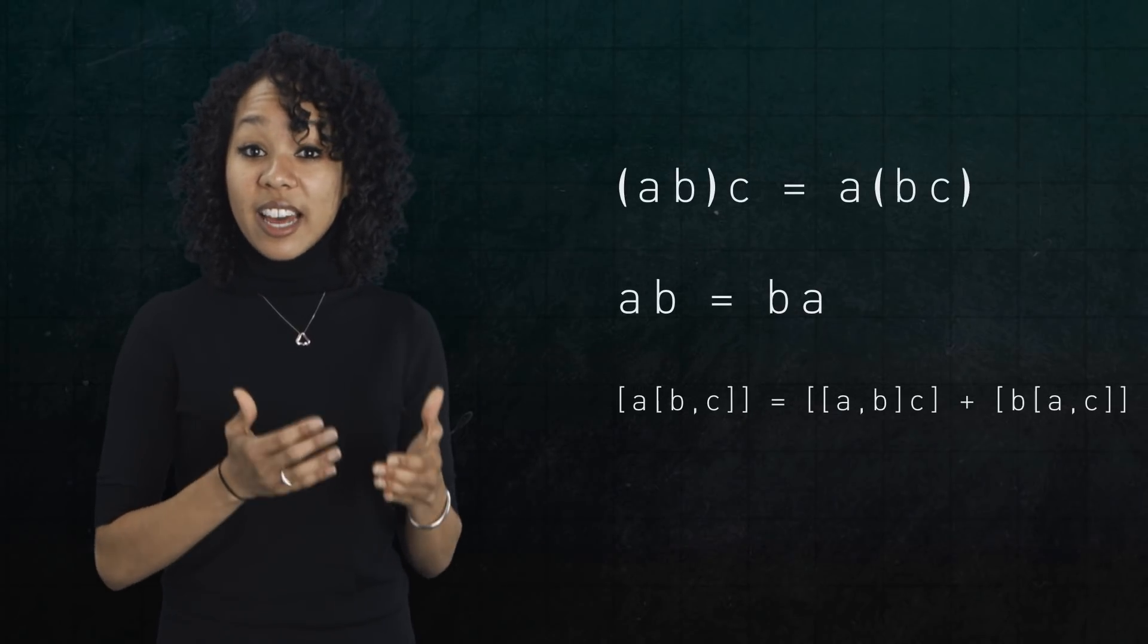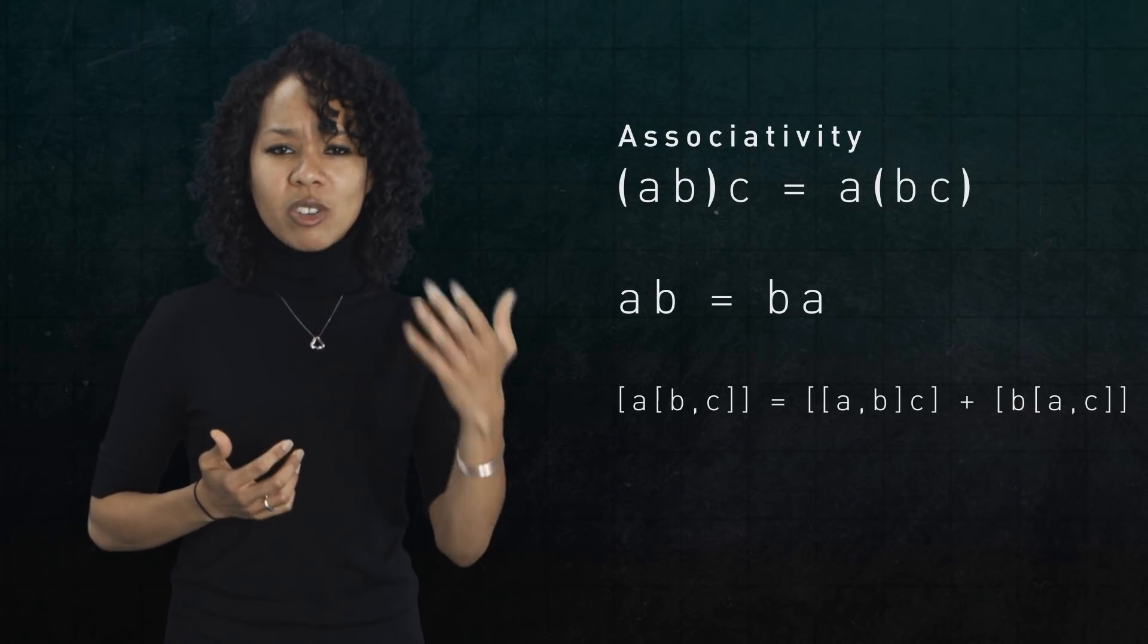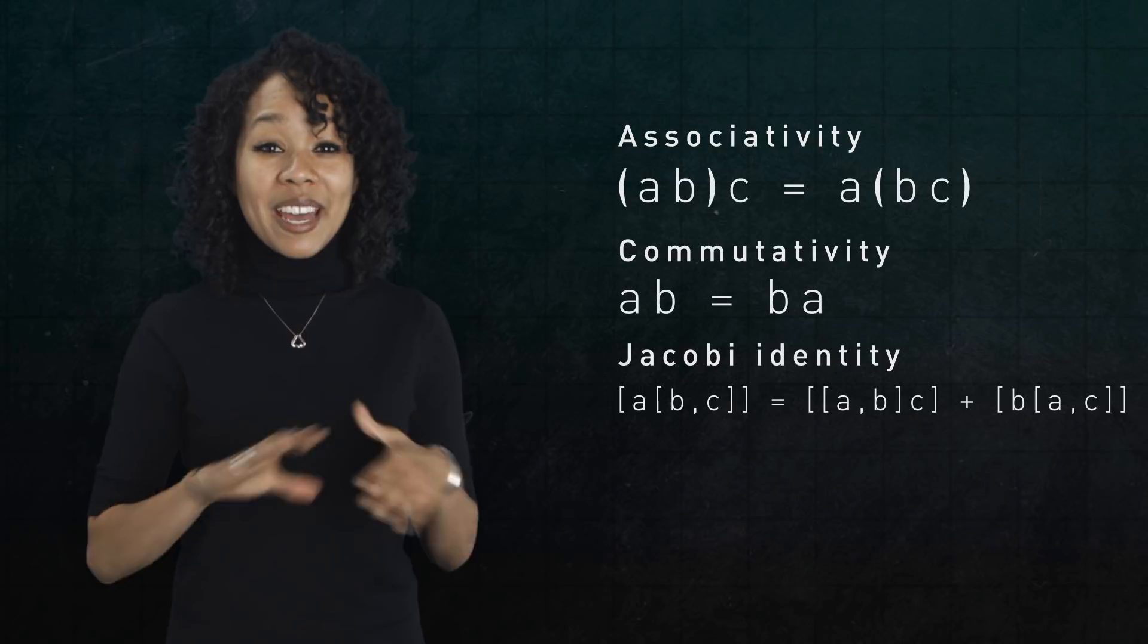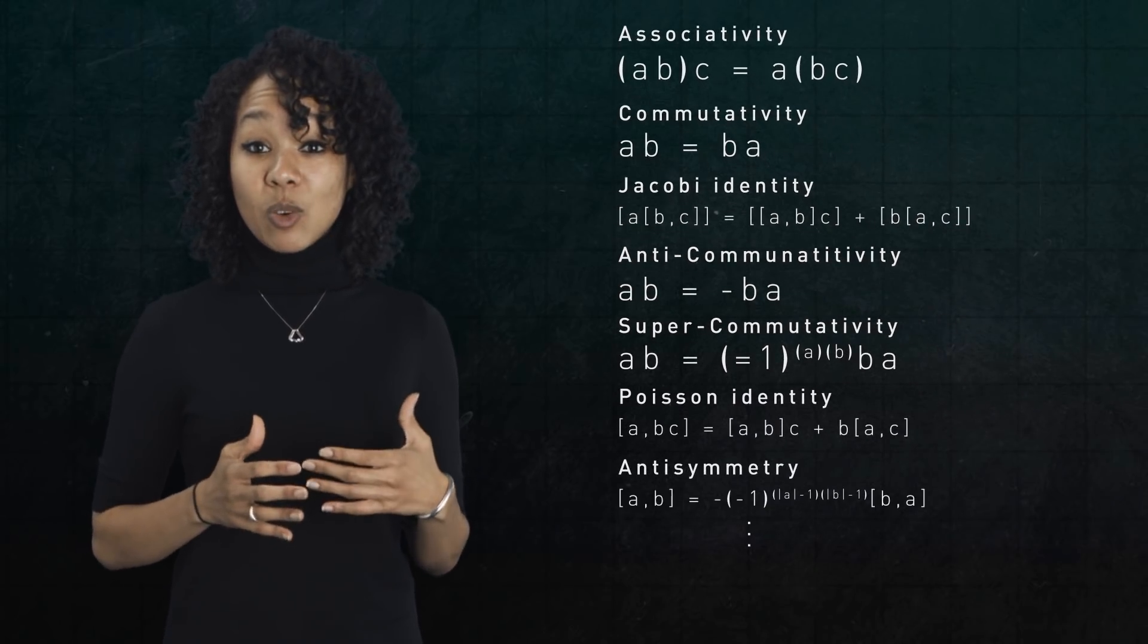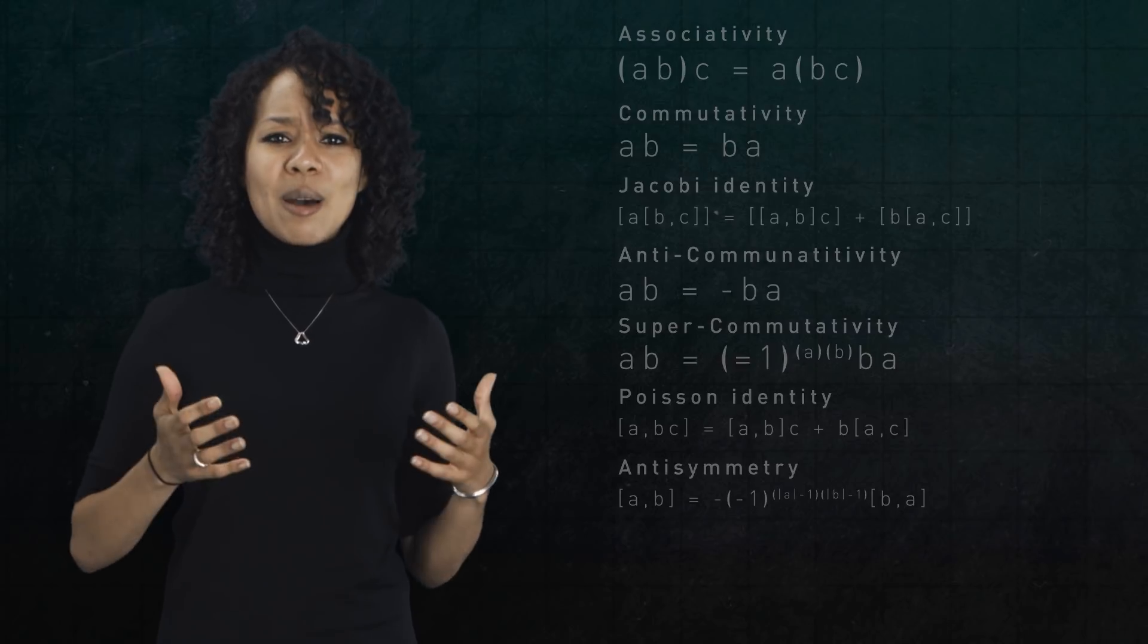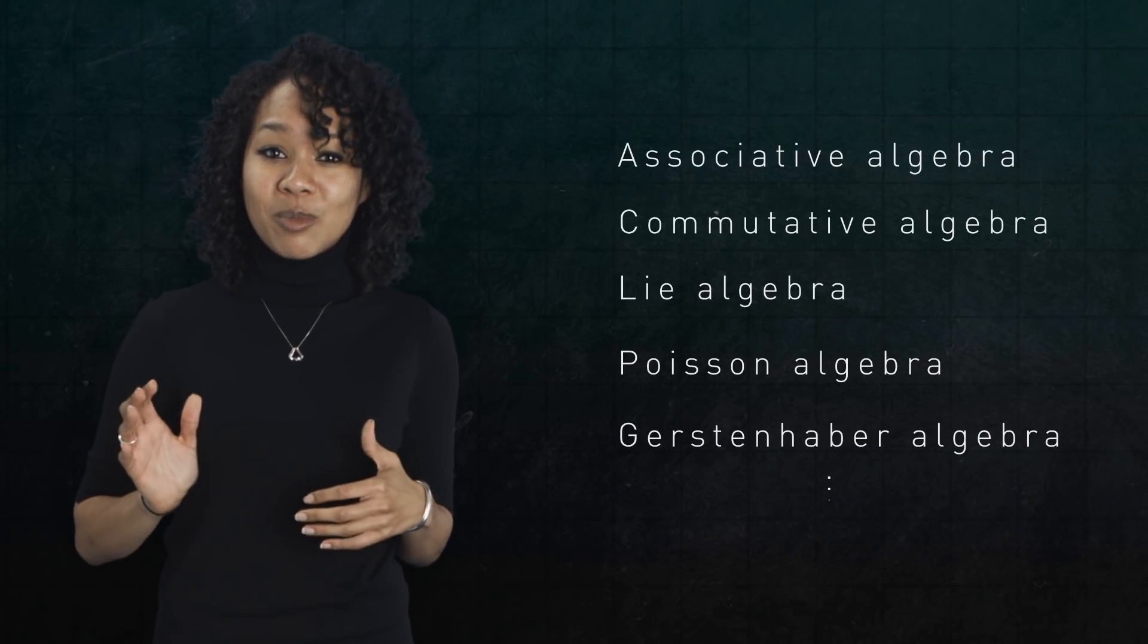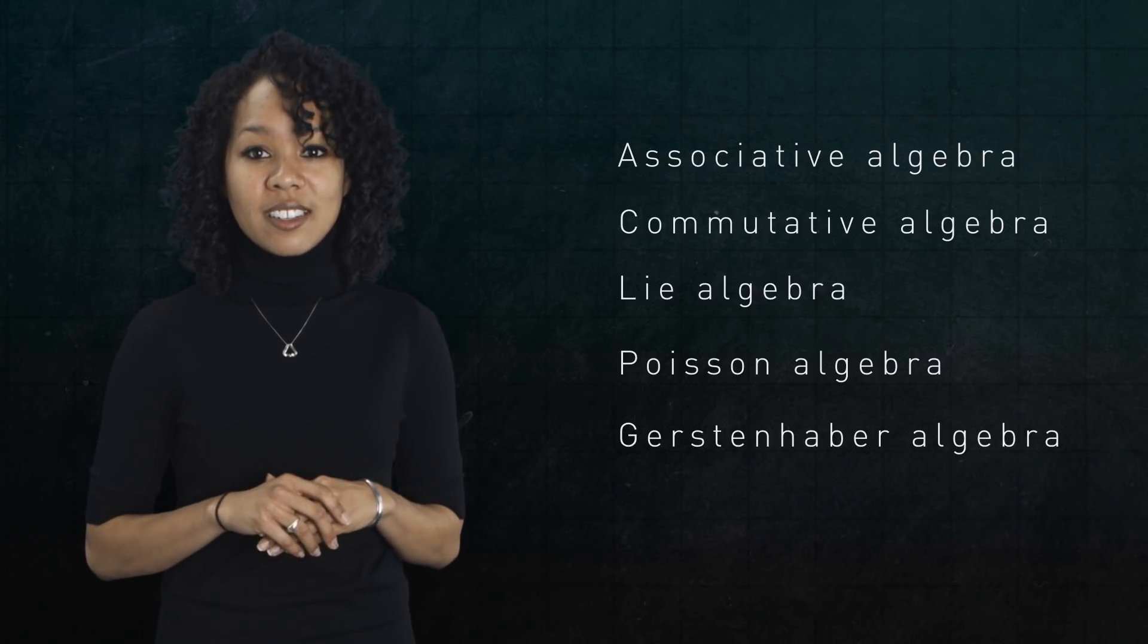So, we've already seen three types of multiplication. If your product satisfies a certain equation or equations, we say, oh, that multiplication is associative or it's commutative or it satisfies the Jacobi identity. And there's a panoply of other equations your multiplication might satisfy. And depending on which equations you have, you say, ah, my set of things forms an associative algebra or Lie algebra or Poisson algebra. And these algebraic structures show up all over math and physics.